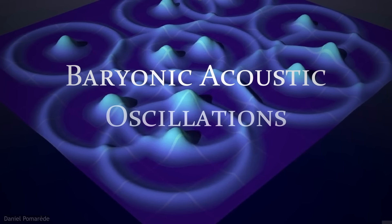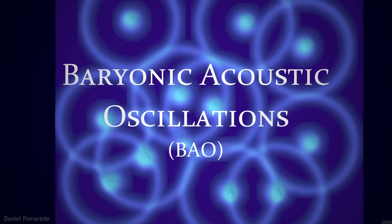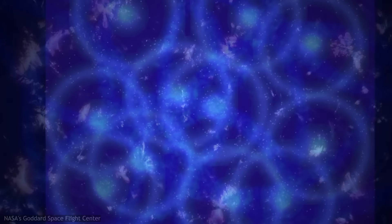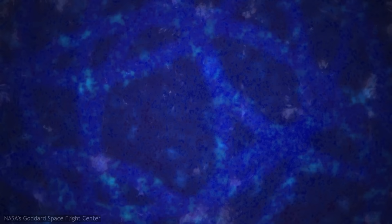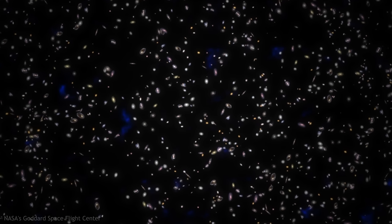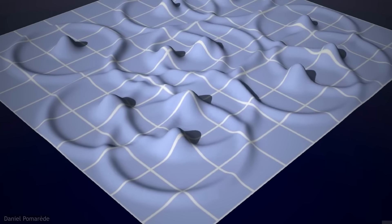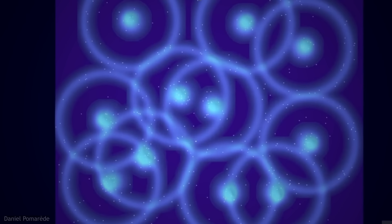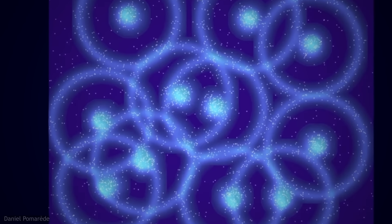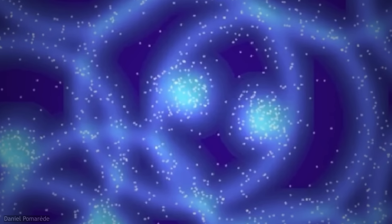When the universe expanded and cooled, it transitioned from a plasma to a neutral gas, releasing the cosmic microwave background. And at that moment, the baryonic acoustic oscillations were frozen in place, trapped in whatever position and state they were in when the plasma dissipated. These oscillations persisted as tiny fluctuations in density, a series of overlapping shells of slightly higher density than their surroundings.